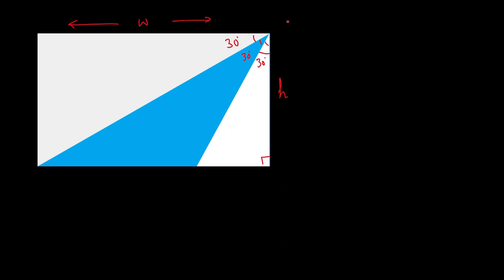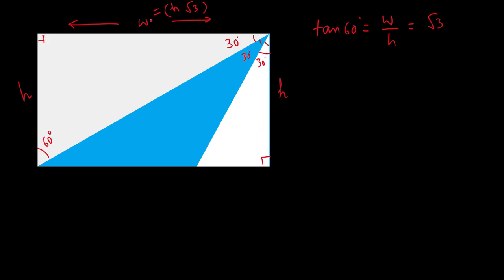The area of the rectangle will be h times w. Now let's look at the white triangle on the top. If this angle is 30° and this is 90°, then this has to be 60°, since the sum of all three angles in a triangle is 180°. Looking at this triangle, tan 60° equals this length w divided by height h. Since tan 60° = √3, we get w = h√3.